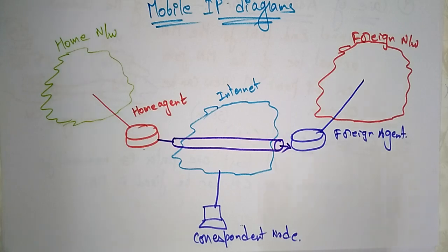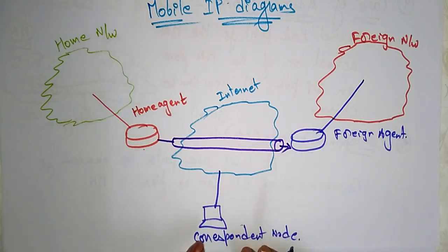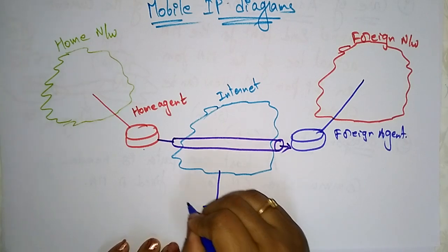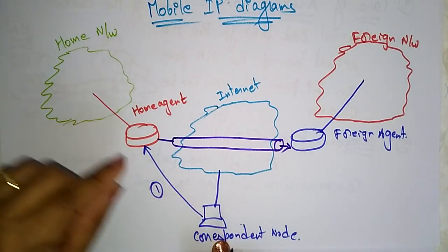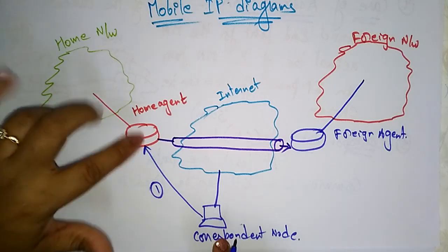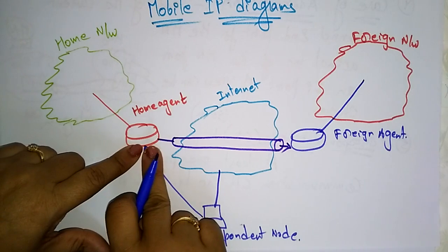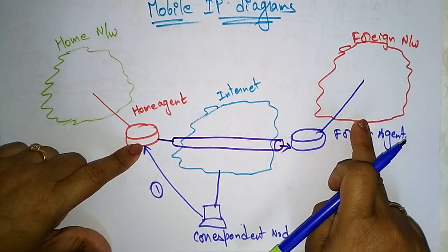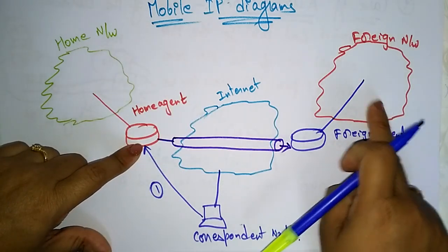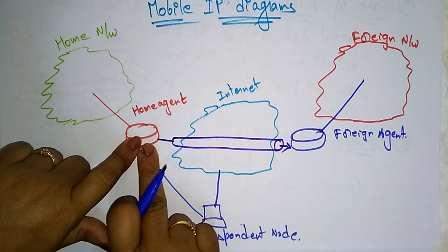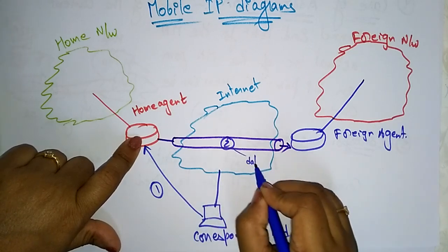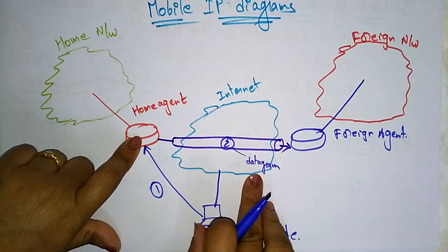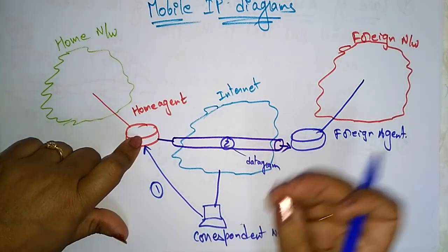Now let's see what exactly it is doing. First, the correspondent node is sending information to the home agent. This means with the help of the correspondent node you are first registering your mobile node at the home network. Now my mobile node is moving from the home network to the foreign network — say from Hyderabad to Bangalore. So the home agent is passing information over the tunnel, which consists of a datagram containing your registered location and the IP address of your mobile node.